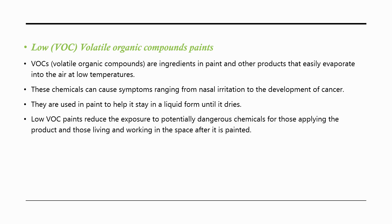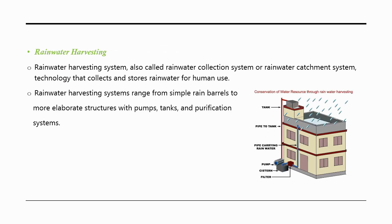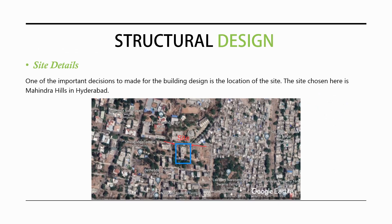Rainwater harvesting systems, also called rainwater collection or catchment systems, are technologies that collect and store rainwater for human use. They range from simple rain barrels to more elaborate structures with pumps, tanks, and purification systems. A screenshot shows an aerial view of the chosen site for the construction of the green building, with further site details provided in the next slide.